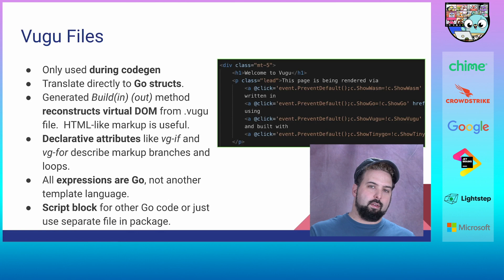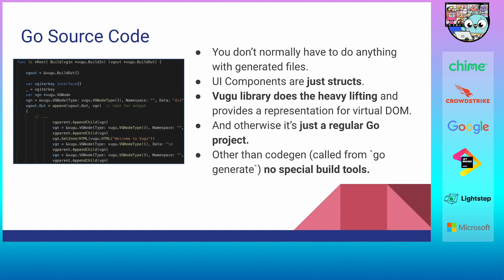When we need to add functional properties to this markup, we do it with declarative attributes. For example, vgif is used to add a condition and vg4 is used to add a loop. These correspond directly to if and for statements in the Go language in the build method. Anytime we see an expression in a VUGU file, we can be sure it is a Go language expression — there's no other template language used. You can also use a special script block to include Go code copied directly to the output file.